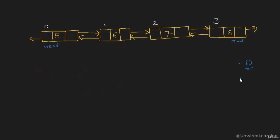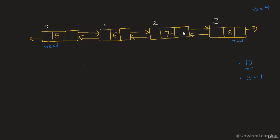Now let me talk about the second case in which we need to delete tail. Whenever we are referring to tail, at this point of time our size is 4. So if index position is given as 3, that means size minus 1, then we are going to remove our tail. All we have to do is destroy this connection and then update the previous element as tail.